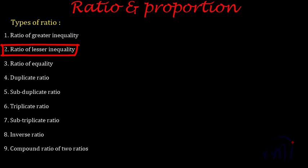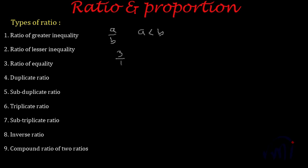Now let's talk about the ratio of lesser inequality. If you have the first term smaller than the second term — suppose a ratio A is to B where A is less than B — then this ratio is called the ratio of lesser inequality. For example, the ratio 3 is to 4 is called the ratio of lesser inequality. If I add 1 to both the first and second terms, the resultant ratio becomes 4 by 5.